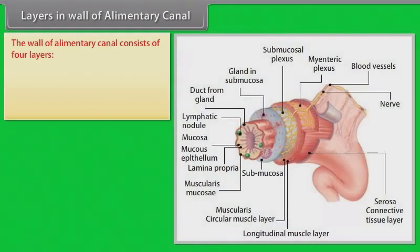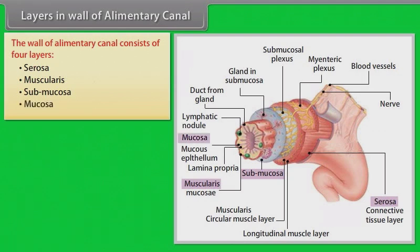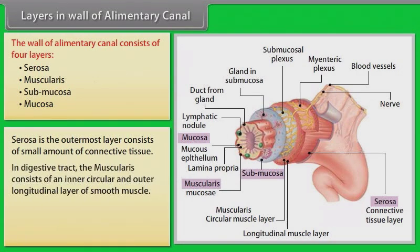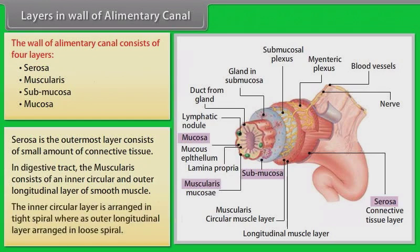The wall of the alimentary canal consists of four layers: serosa, muscularis, submucosa, and mucosa. The serosa is the outermost layer consisting of a small amount of connective tissue. In the digestive tract, the muscularis consists of an inner circular and outer longitudinal layer of smooth muscle — the inner circular layer is arranged in a tight spiral, while the outer longitudinal layer is arranged in a loose spiral.